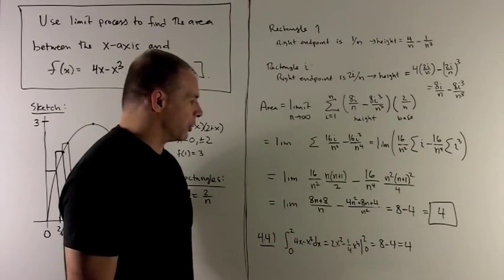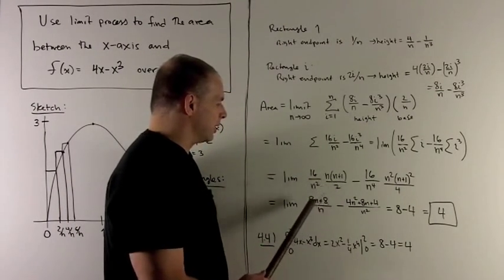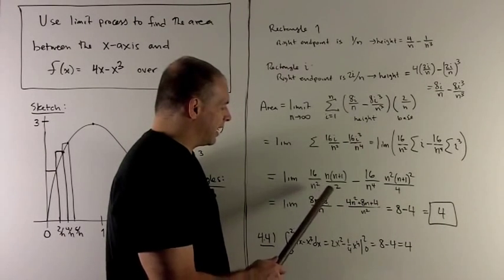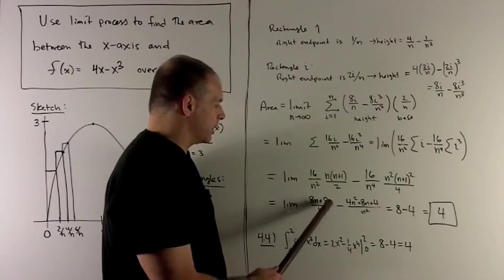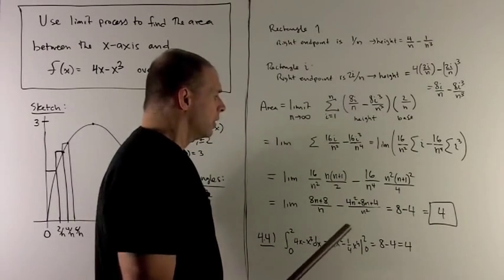Now I can just start crunching away. So here, one of the n's will go away, the 16 and 2 become 8. So I'm just going to push the 8 into the n+1 to get 8n+8 over a remaining n.